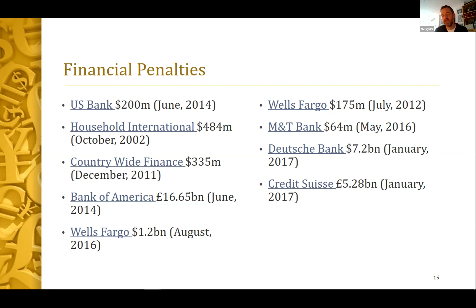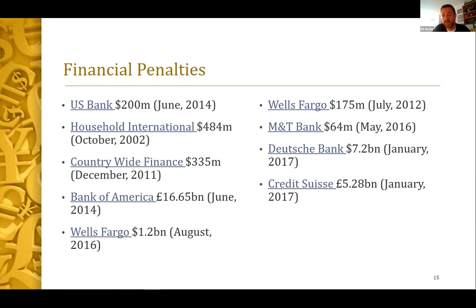Redlining is where US lenders refuse to offer loans to individuals based on the socioeconomic makeup of a particular area — some call it racial profiling. To address this, the 1977 Community Reinvestment Act compels US lenders to maintain a branch network. Various US enforcement agencies have imposed large fines for predatory lending on US Bank, Coastal International, Bank of America, Wells Fargo, Deutsche Bank, and Credit Suisse.